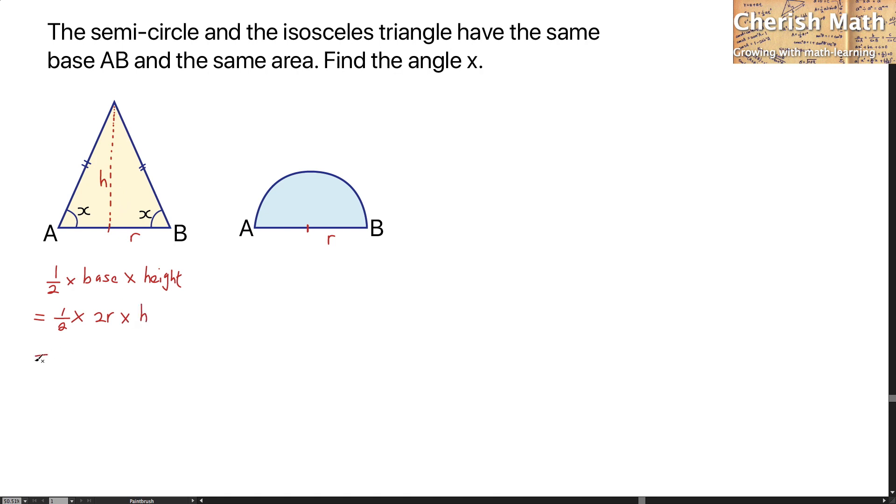So I will be getting RH as the area of this triangle. Now, I'm going to work out the area of the semicircle. The area of a circle is πR². Since this is a semicircle, I have to multiply by one-half. That's the area of the semicircle.